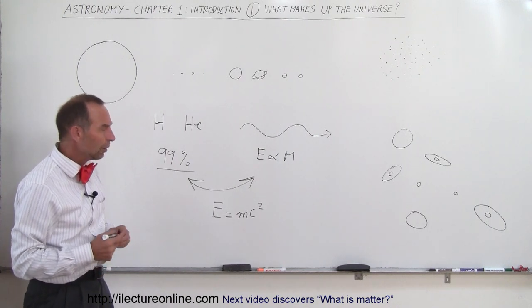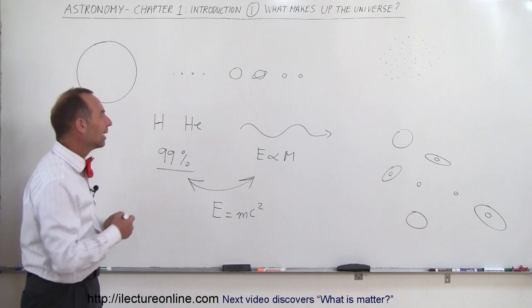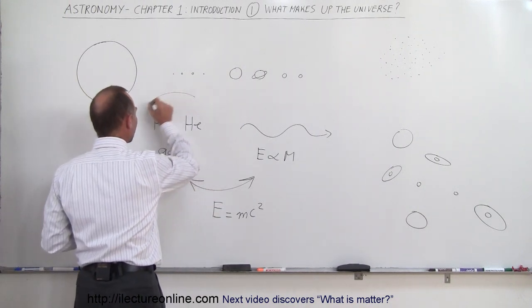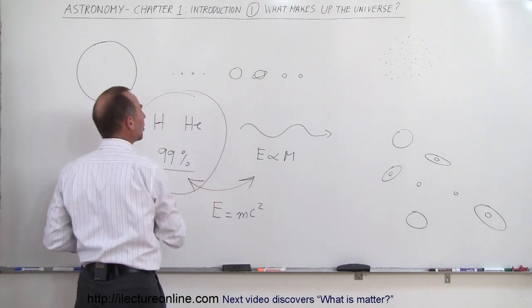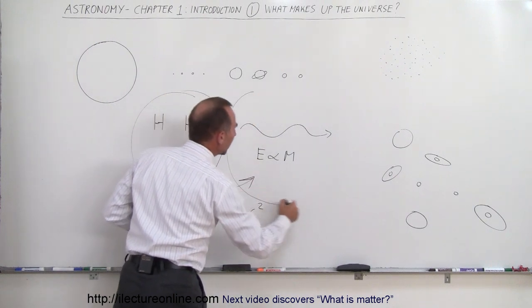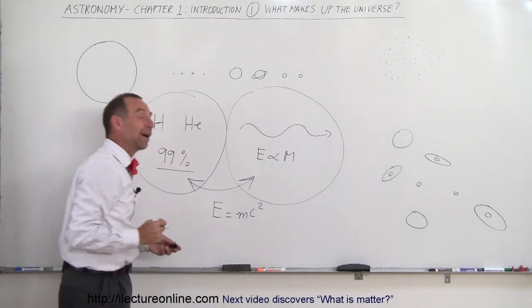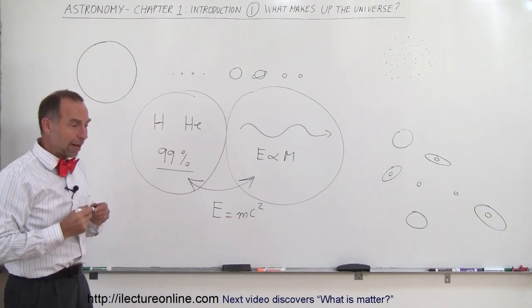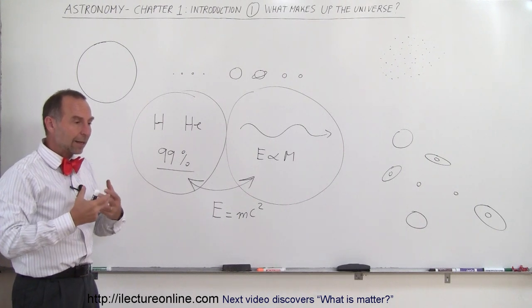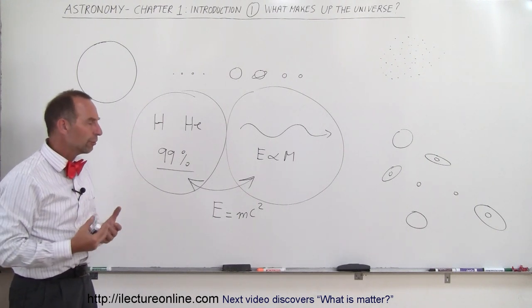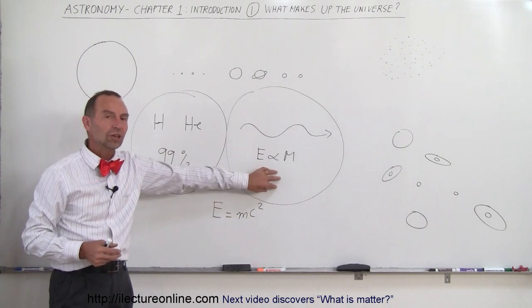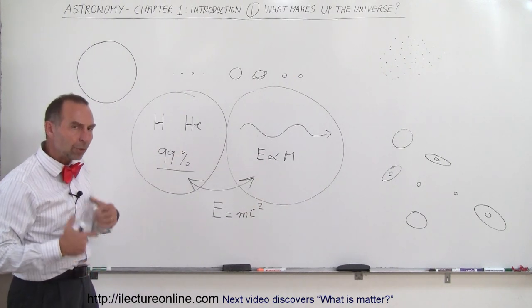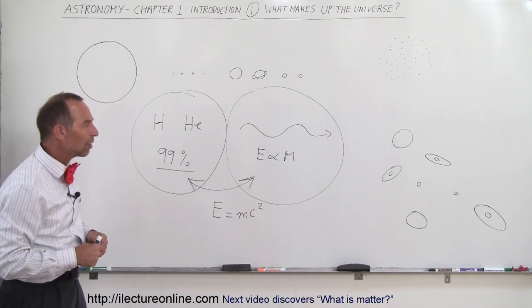When you think about the universe and what it's made of, it's really made up of a lot of visible matter, primarily hydrogen and helium, and electromagnetic radiation. In fact, if you think about all the available energy and matter in the universe, a large percentage is actually energy as opposed to matter. We'll talk more about that in later chapters.